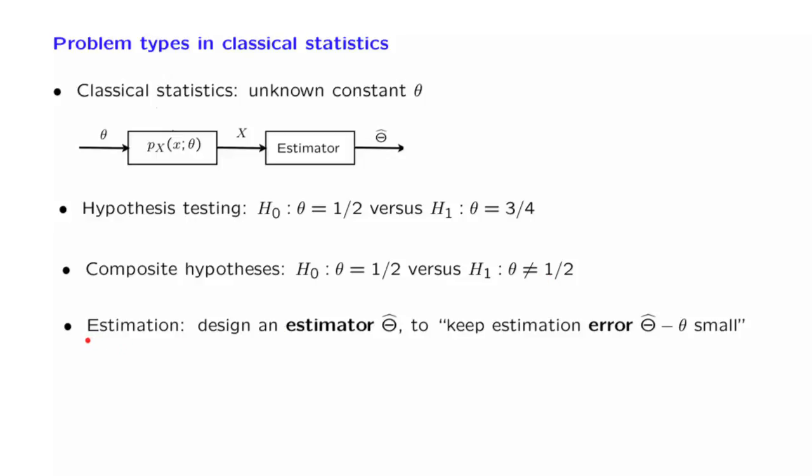Instead, we will focus exclusively on estimation problems. In estimation problems, the unknown parameter, theta, is either continuous, or can take one of many, many values. What we want to do is to design an estimator, a way of processing the data, that comes up with estimates that are good. What does it mean that an estimate is good? An estimate would be good if the resulting value of the estimation error, that is, the difference between the estimated value and the true value, if that difference is small.